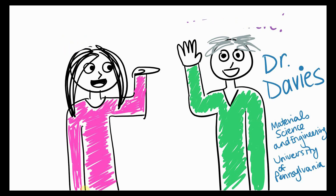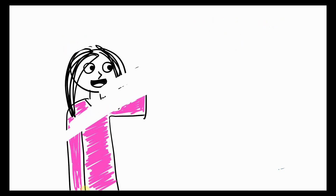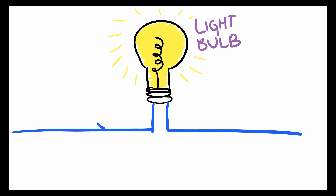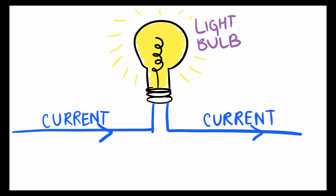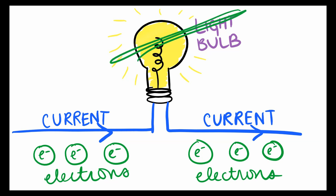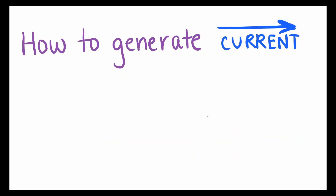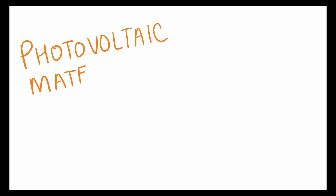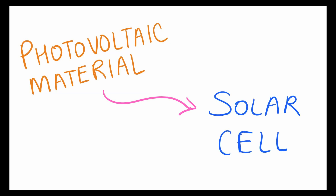So let's start by talking about a normal electric device, like a light bulb. A light bulb works when a bunch of electrons, or a current, is flowing through it. Current is what most of our electric appliances use to work. But how do we generate that current? And most importantly, how do we generate it using sunlight? This is where we need what's called a photovoltaic material, and what we're going to do with the photovoltaic is make a solar cell.